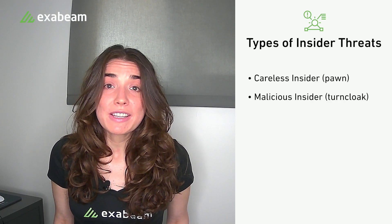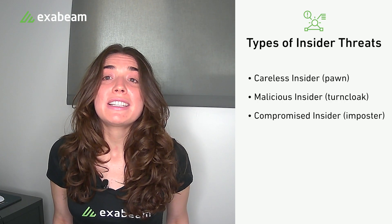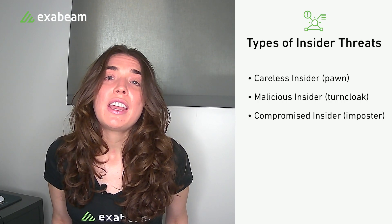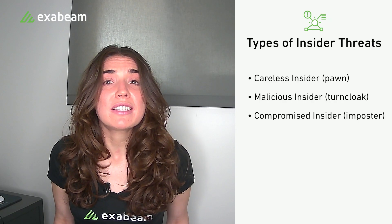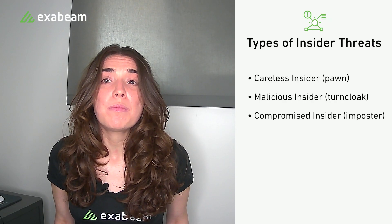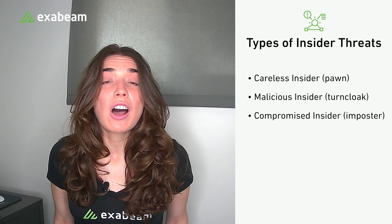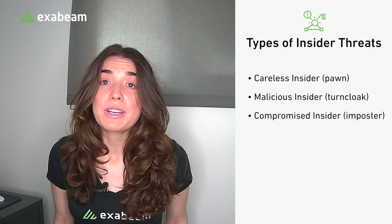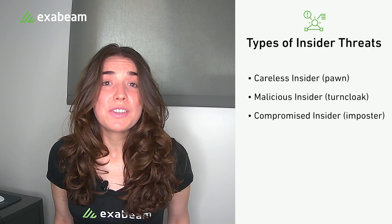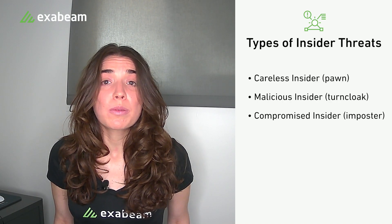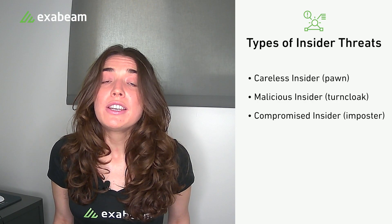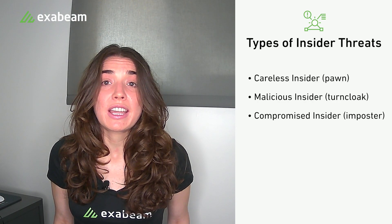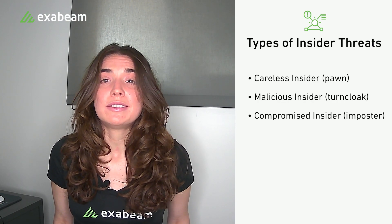The third type of insider threat actor is a compromised insider, or an imposter. An imposter, as the name implies, is an outsider who poses as an employee and gains authorized access to an organization's resources. Imposters could be individuals engaged in corporate espionage, or an employee who unknowingly clicks on a phishing link and has their credentials stolen.